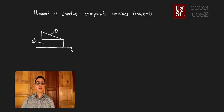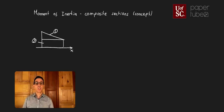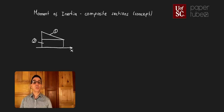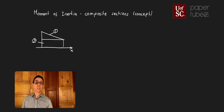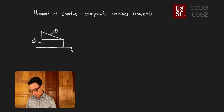You can Google 'second moment of area' or 'moment of inertia' and you're going to find a number of tables that will tell you the moment of inertia for those common shapes — rectangles, triangles, circles, semicircles, and all other common shapes.